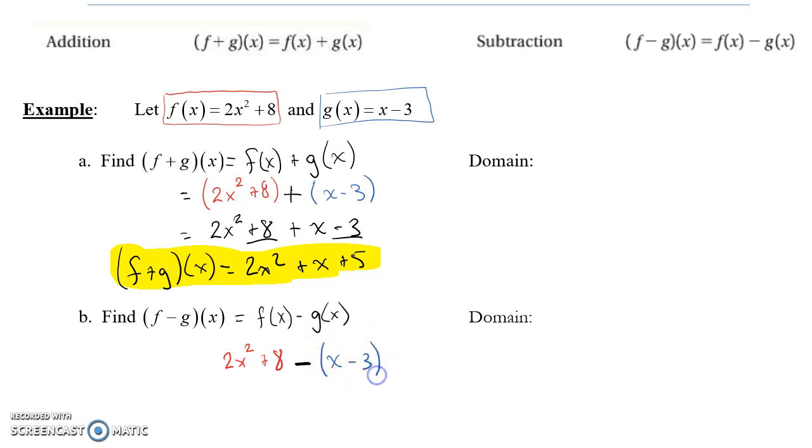Here's where it really matters that we had these written as quantities, because it's the entire function that I'm subtracting. That matters, because when I now distribute, I'm distributing my subtraction, or a negative 1. I'm subtracting x minus x, and subtracting negative 3, that makes it a plus 3.